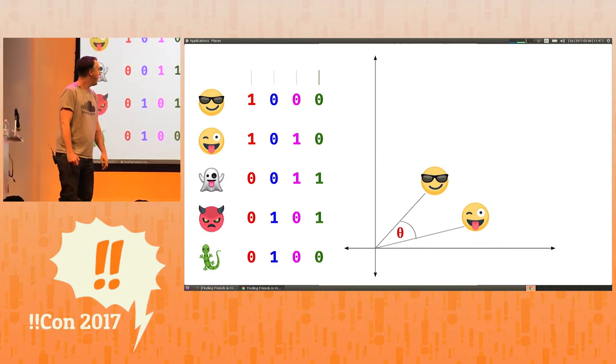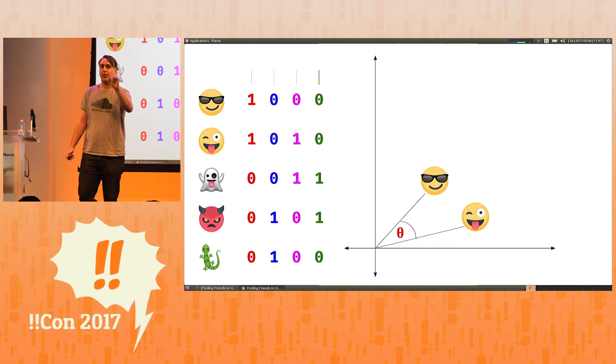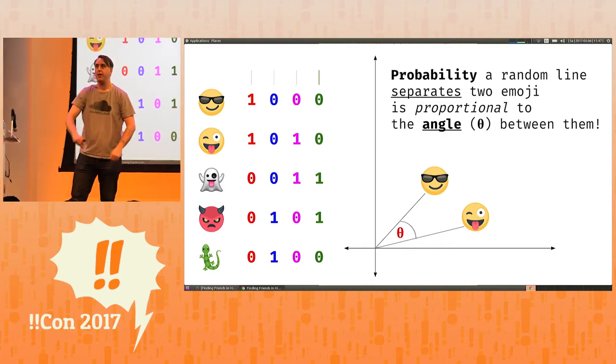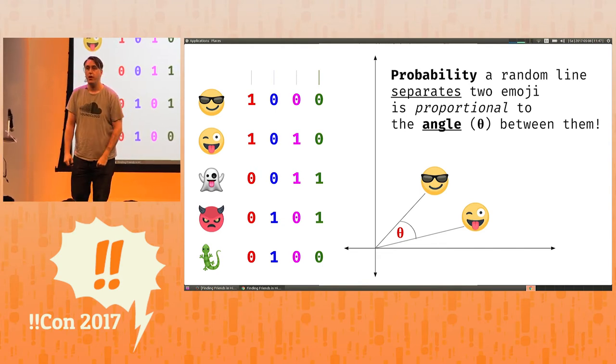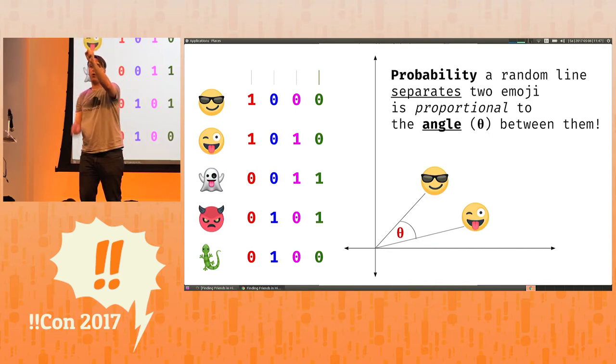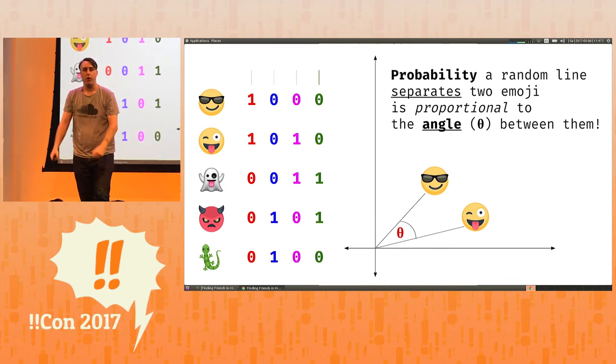Let's look at this binary representation very quickly. I'm going to make a claim. I'm going to claim that the probability that you picked a random line that separated two emoji is proportional only to the angle between them. So think about this for a second. You have two vectors. They're really close together. We're picking random lines. What is the likelihood if these two vectors are close together that your line separates them? It's pretty small.